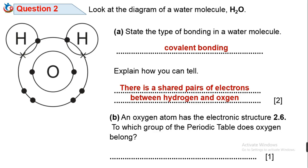Question 2b: An oxygen atom has the electronic structure 2,6. To which group of the periodic table does oxygen belong? The number of electrons in the outermost shell of an element determines the group to which it belongs. Given the electronic structure 2,6, the last number — 6 — is the number of electrons in the outermost shell, so oxygen belongs to Group 6 of the periodic table.